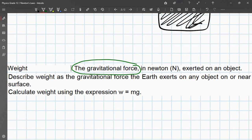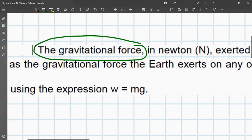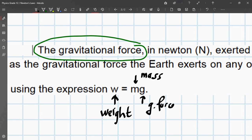w is equal to mg, where w is the weight, that's your weight, that's your mass, and that's your gravitational force.